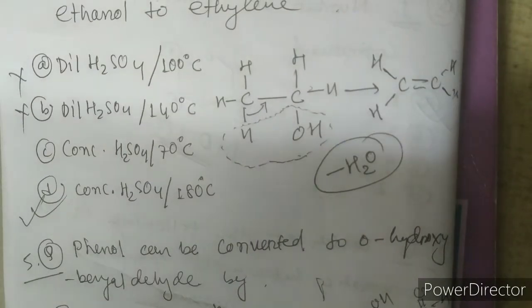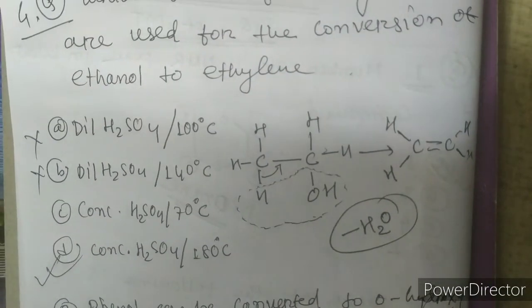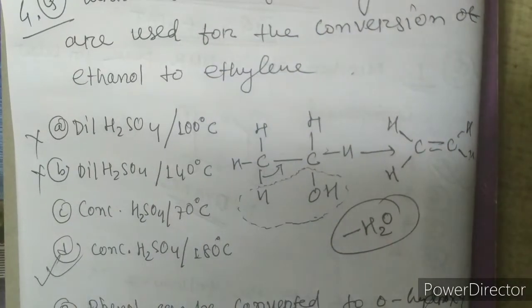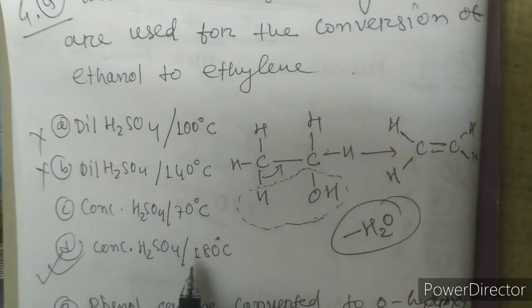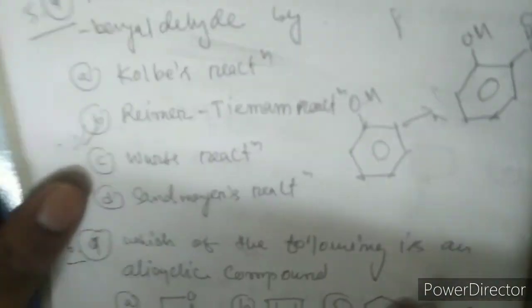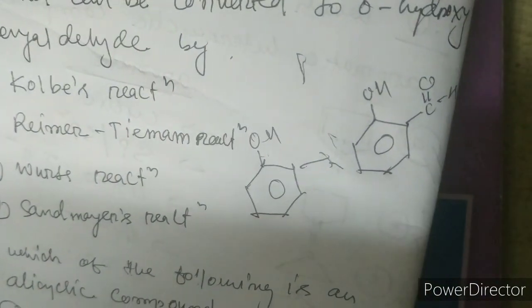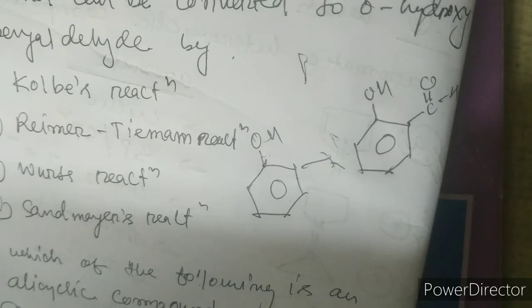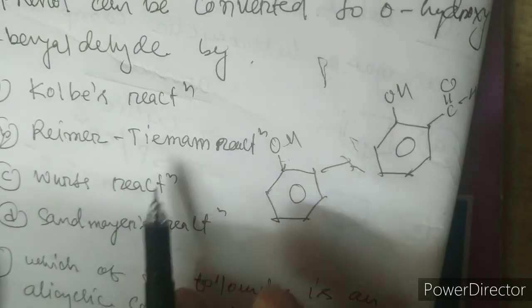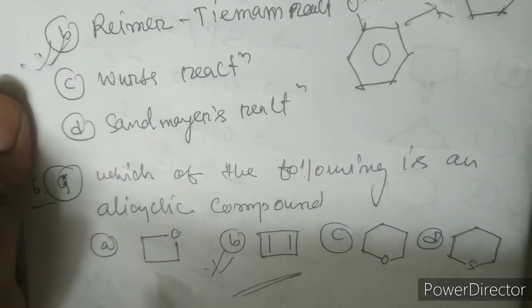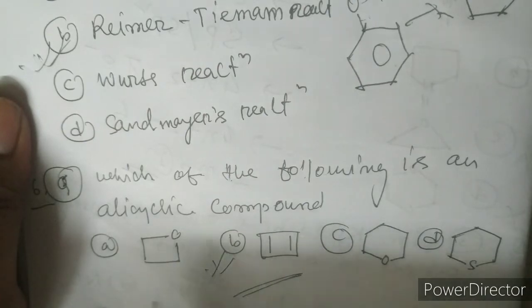Q4: ethanol to ethylene is a dehydration reaction where water is removed. When H2SO4 is involved, it is concentrated H2SO4 — options A and B are cancelled. Temperature is either 170 or 180°C, both are correct. Q5: phenol is converted to salicylaldehyde (o-hydroxybenzaldehyde) via the Reimer-Tiemann reaction — go through it once. Q6: the alicyclic compound is option B; the others are heterocyclic.